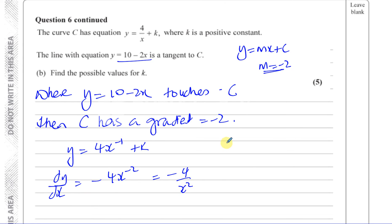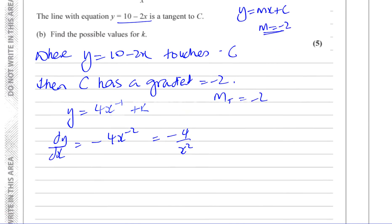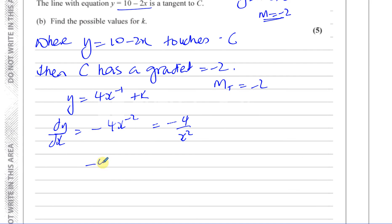The gradient at the point where they touch has to equal minus 2. So minus 4 over x² equals minus 2. Rearranging: minus 4 over minus 2 equals 2 equals x². So x equals plus or minus the square root of 2. That is the x value of where they intersect.